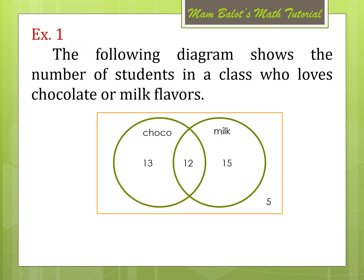Let us have example number 1. The following diagram shows the number of students in a class who loves chocolate or milk flavors. From the diagram, we can see that there are 13 and 12 students who love choco flavor, enclosed in the circle of the choco flavor. In the milk flavor, we have 12 and 15 students. And we have 5 students outside the two circles, which means these students don't love chocolate or milk flavors.